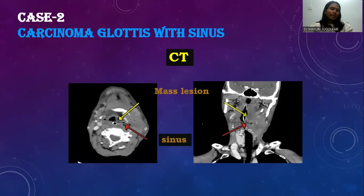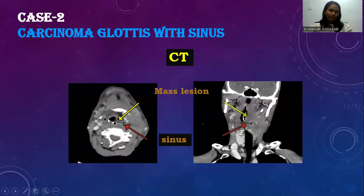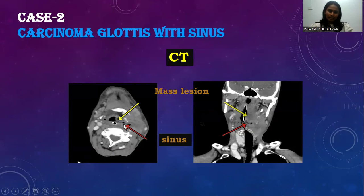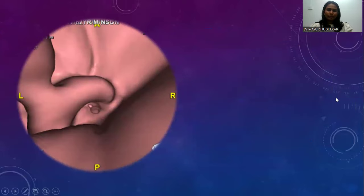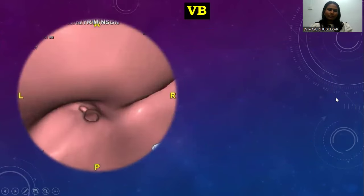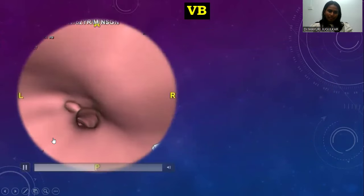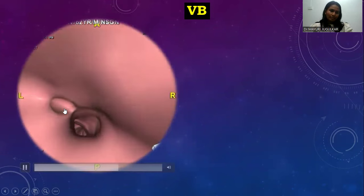Moving to the next case: a 65-year-old male complained of unexplained hoarseness of voice. CT neck suggested an ill-defined mass involving the vocal cords and anterior commissure. A blind-ending sinus is seen within the mass. This is the mass, and this is the sinus tract.